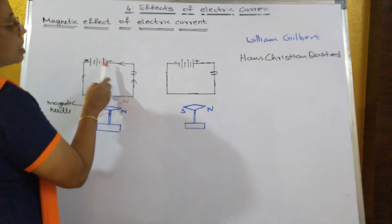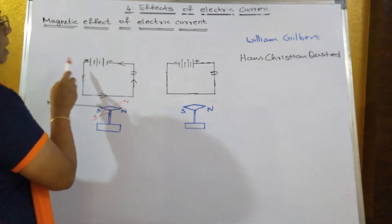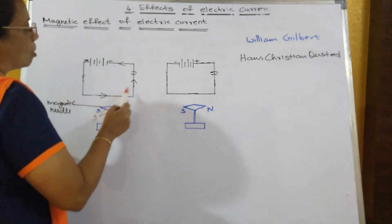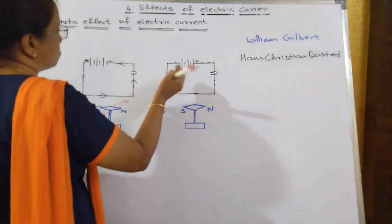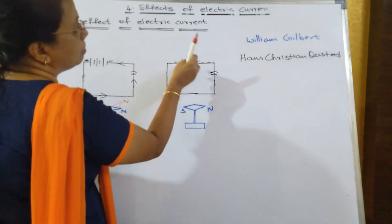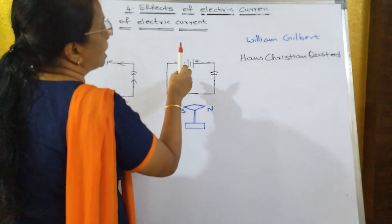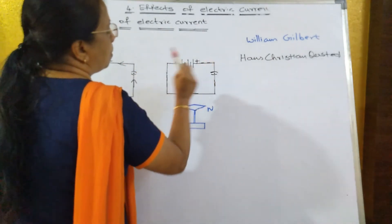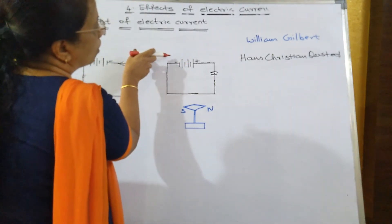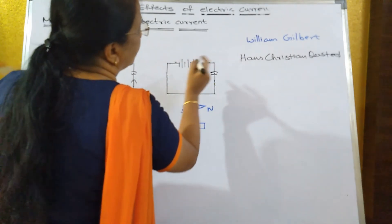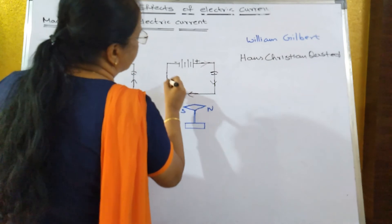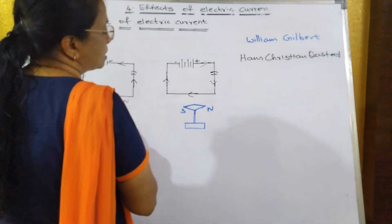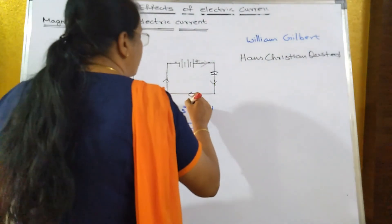When the wire is connected with the negative end to the left-hand side and the positive end to the right-hand side, current flows in the anti-clockwise direction and the magnetic needle deflects one way. Now I will reverse the battery — the right-hand side of the metallic conductor is connected to the positive pole and the left-hand side to the negative pole. When I close the key, current flows from negative to positive, now in the clockwise direction. The magnetic needle again gets deflected, but in the opposite direction.